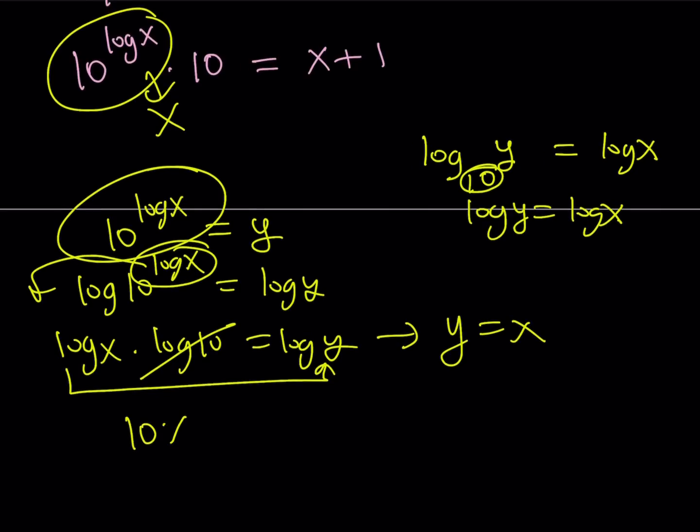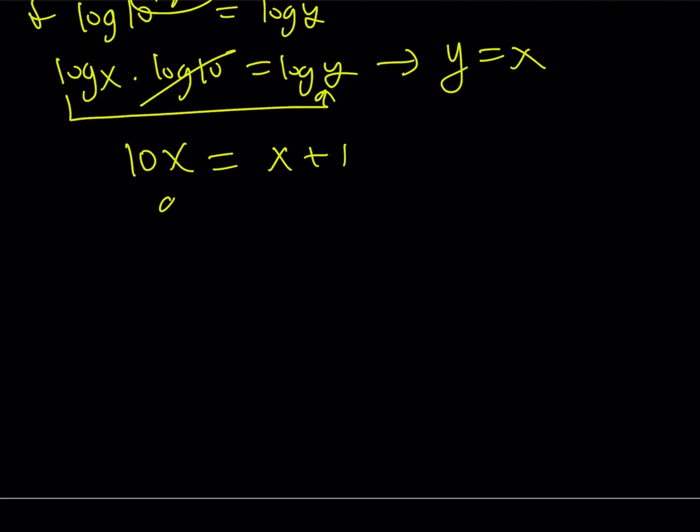And from here, you're getting 10x equals x+1. Awesome. Let's subtract x from both sides and get 9x equals 1. By dividing both sides by 9, we're going to be getting x equals 1/9. And this gives us the exact same answer.